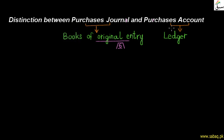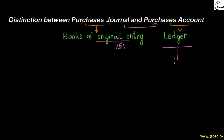Now we move to the purchases account. After recording in the purchases journal, the next step is the purchases account. The purchases account is a T-shaped account — a ledger account — where purchase transactions from the journal are transferred. This is what we call the ledger.